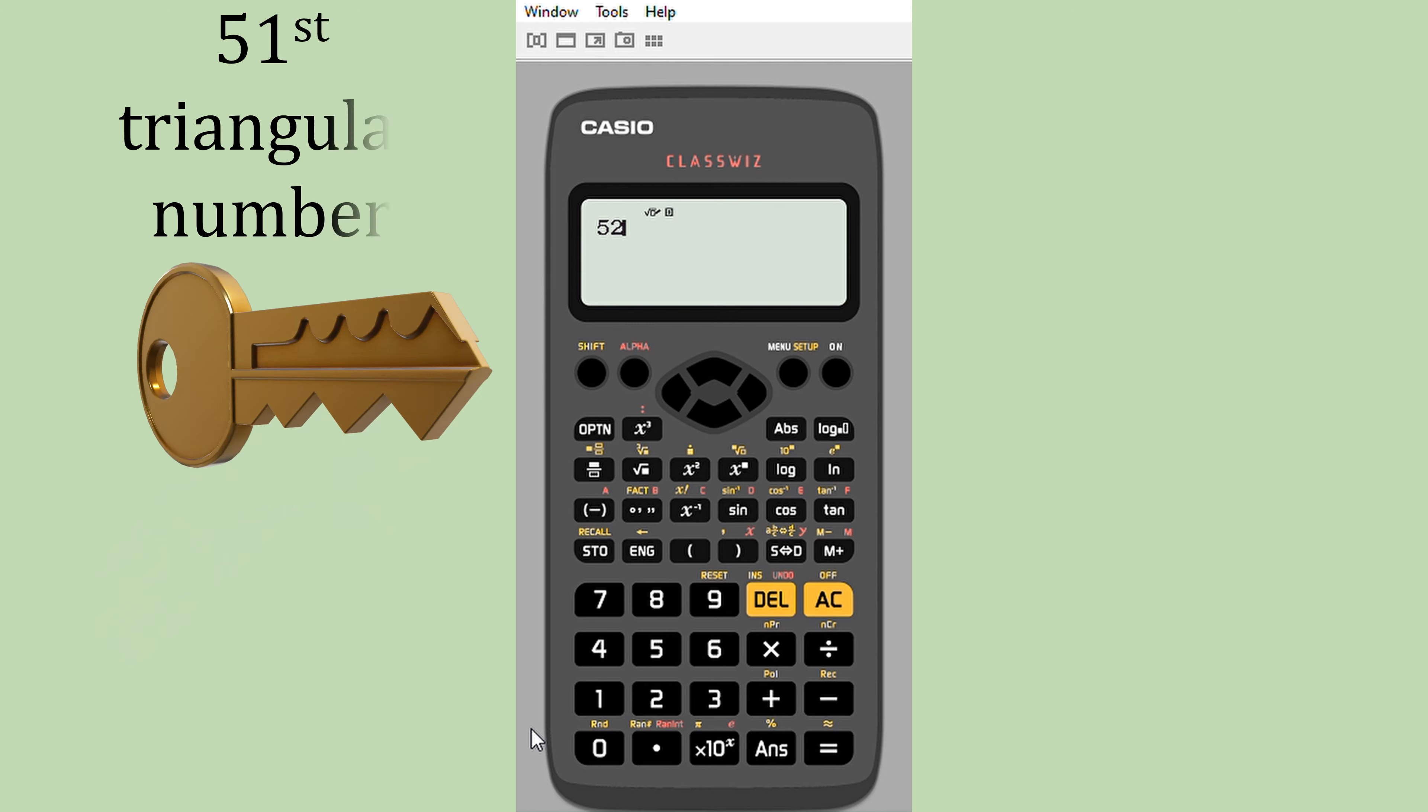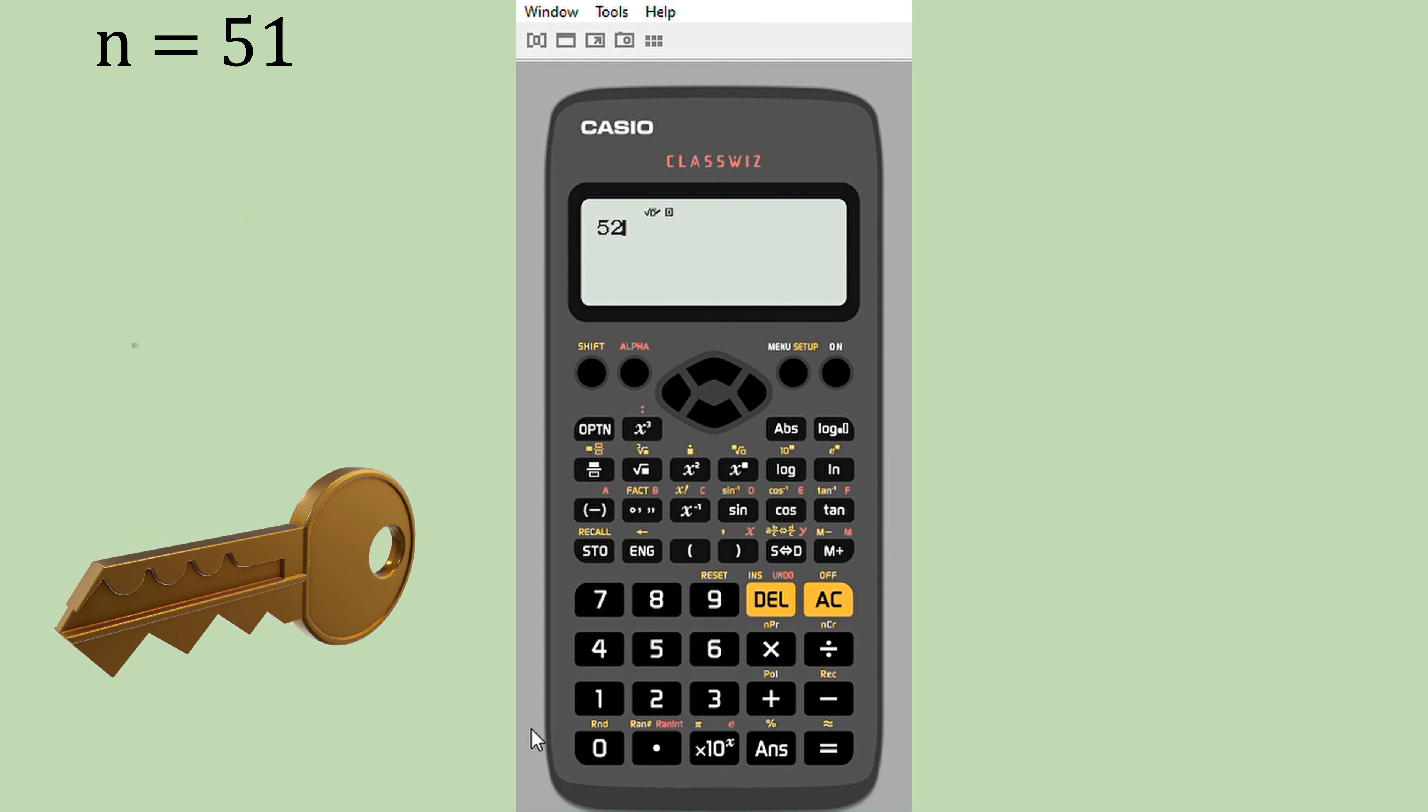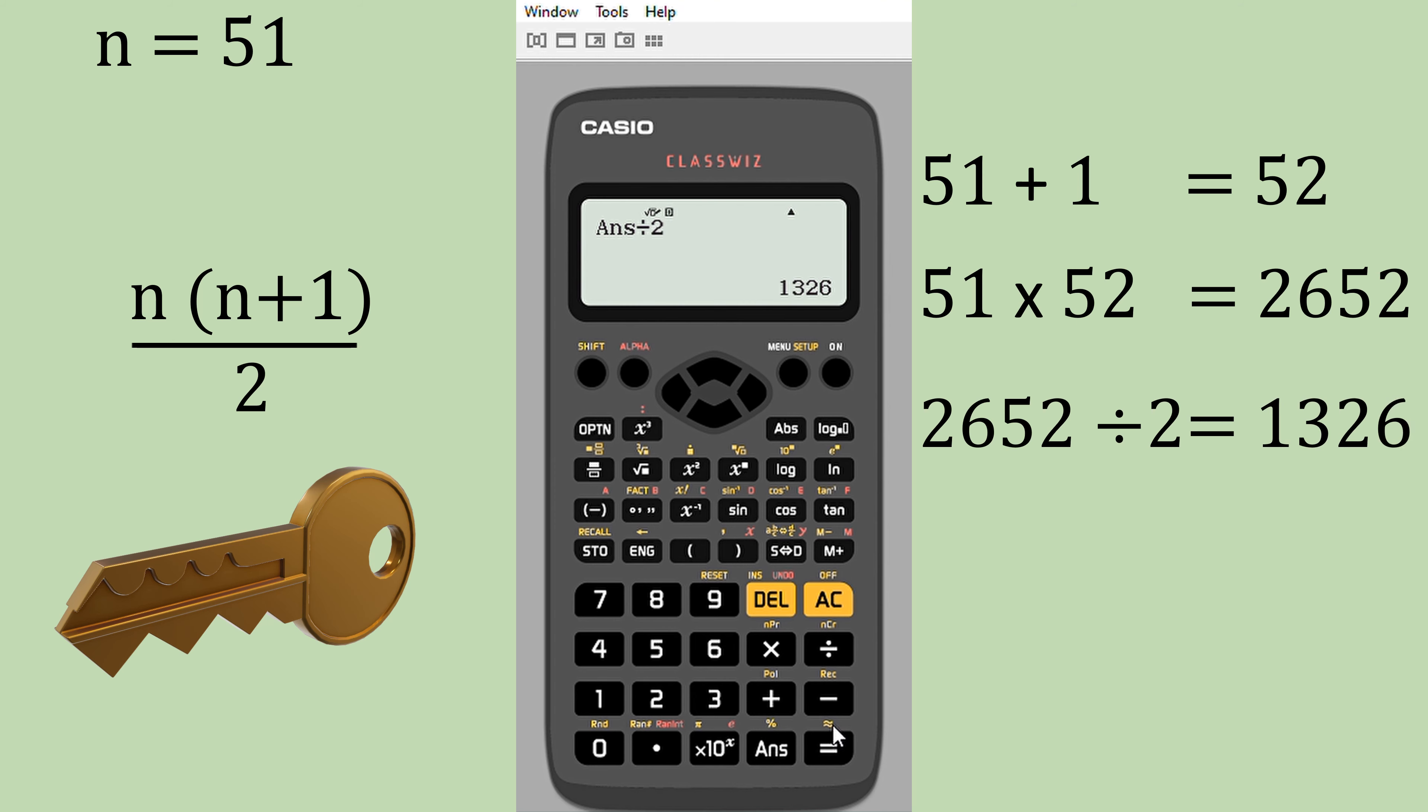Let's do the 51st triangular number. You have the key, you know the formula, nice and easy. So n plus one is 52, then we're going to multiply 52 by n, which is, of course, 51. And that gives us 2652. So then we've got our answer and we're just going to divide that by two. Nice and easy on the calculator. So the 51st triangular number is 1326.